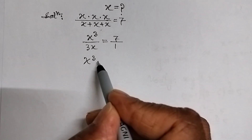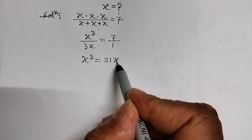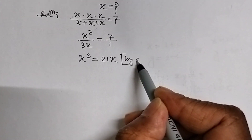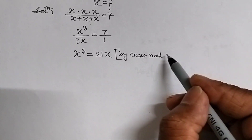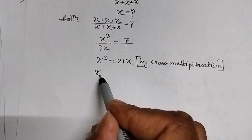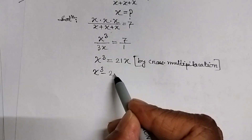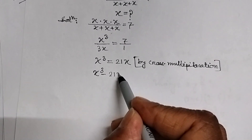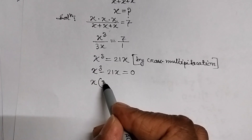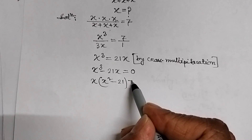So x cube equals 21x by cross multiplication. Therefore, x cube minus 21x equals 0, which gives x into x square minus 21 equals 0.